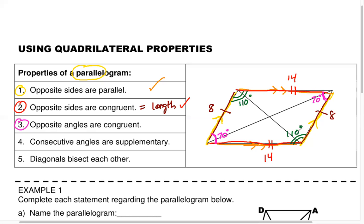Please make sure you're taking good notes on this, as it will be very helpful moving forward. This is what's meant by opposite angles are congruent, or the same measure. Check. That brings us to property four: consecutive angles are supplementary.